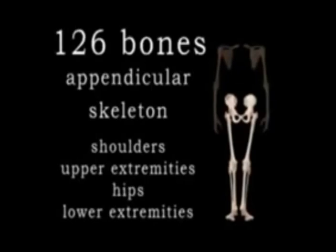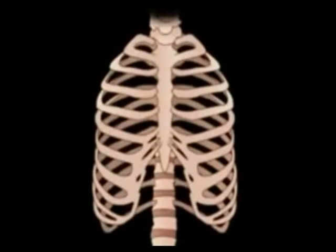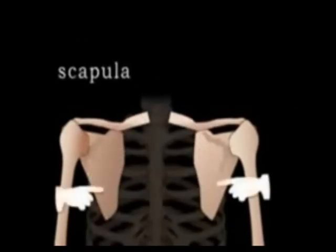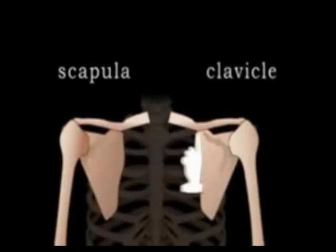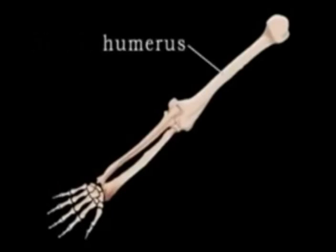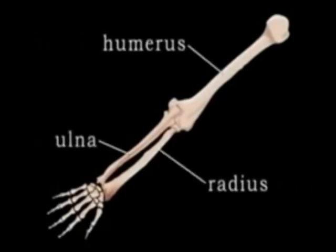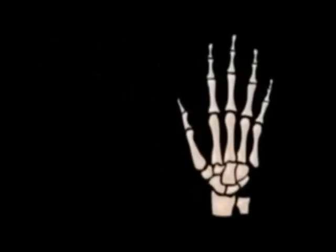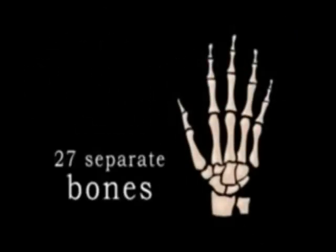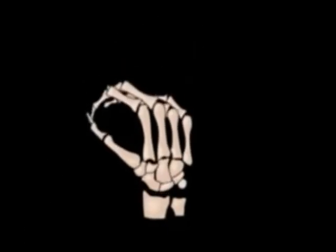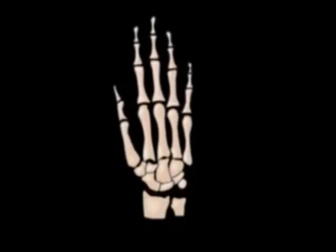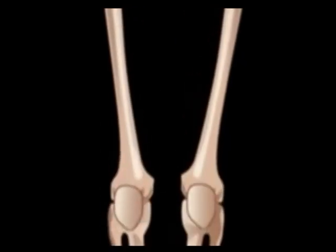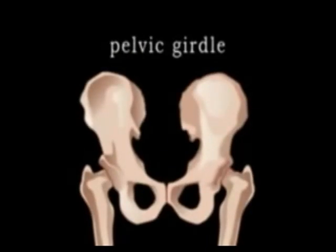The bones of the upper extremities or the arms are connected to the axial skeleton via the shoulder girdle. These consist of the scapula or shoulder blade and the clavicle, also known as the collar bones. The arm itself is composed of the humerus or upper arm and the radius and ulna of the forearm, plus the wrist and hand which consists of 27 separate bones. Because of this large number of bones, the hands are capable of more movement than any other part of the body. The bones of the lower extremities or the legs are connected to the axial skeleton via the pelvic girdle, which is formed by the two hip bones.